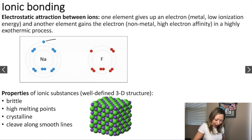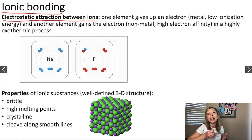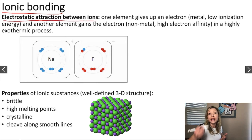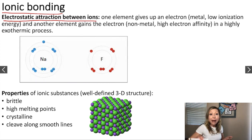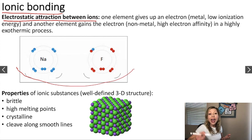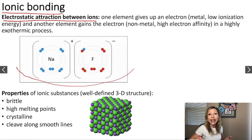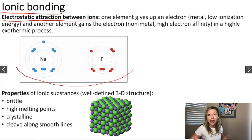Let's talk more about ionic bonding. We know that this is an electrostatic attraction between ions. One element will give up an electron and the other element is going to gain it. A metal is going to give up its electron — in this case, sodium — and fluorine is going to gain it. So we are going to form an Na+ and an F- fluoride ion.